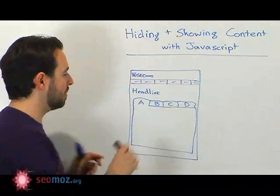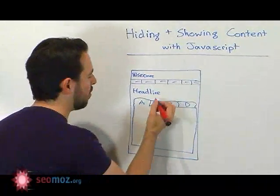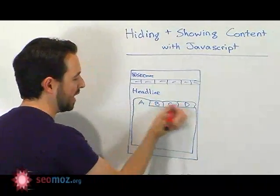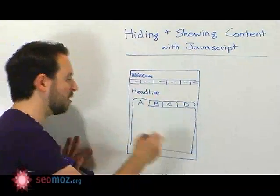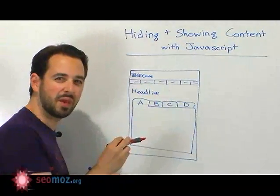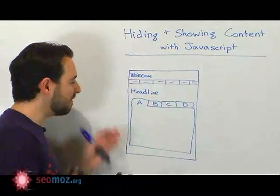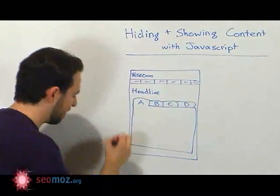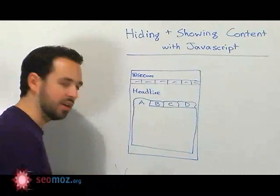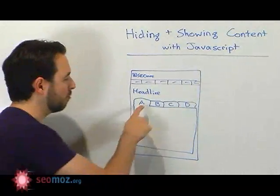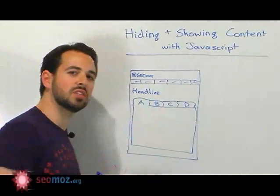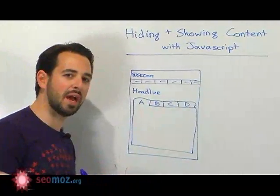Now the problem is I don't really want to have four pages all targeting this one thing. I really want all this content on one page, but it's not very user friendly to have it go on and on all the way down the page. I'd really like to use this tab format.